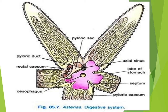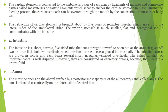The lobes and arms are present. You can see the pyloric duct and pyloric sac. The esophagus is present in small tube form. The cardiac stomach is connected with the help of ligaments of muscles and connective tissue, which we call mesenteries. During the feeding process, the cardiac stomach can be everted through the mouth by contraction of the muscles of the body wall. The retraction of the cardiac stomach is brought about by five pairs of retractor muscles, which arise from the lateral side of the ambulateral ridges. The pyloric stomach is much smaller, flat, and pentagonal sac.